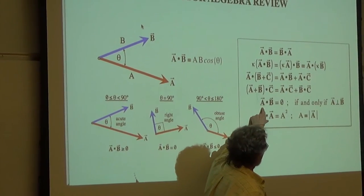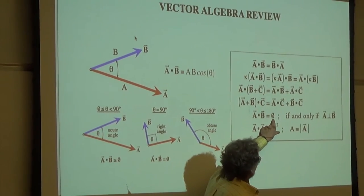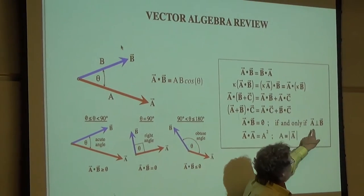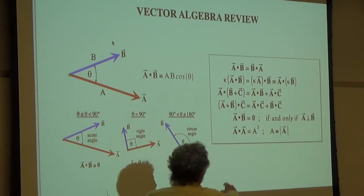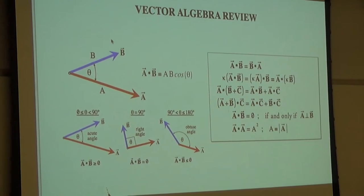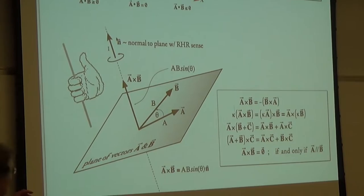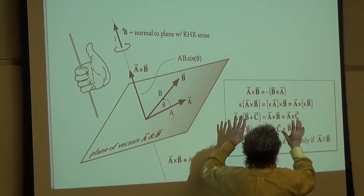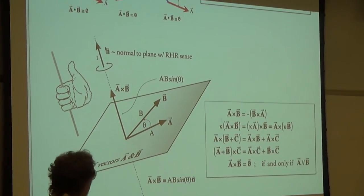You should know certain geometrically-based things like this: if the dot product of two vectors is equal to zero, what does that tell you about those two vectors? That's a geometric implication. The dot product of a vector with itself is always the square of that vector's magnitude. I put side by side the geometric definition of the operations, and then the more mathematical conditions that those operators satisfy.